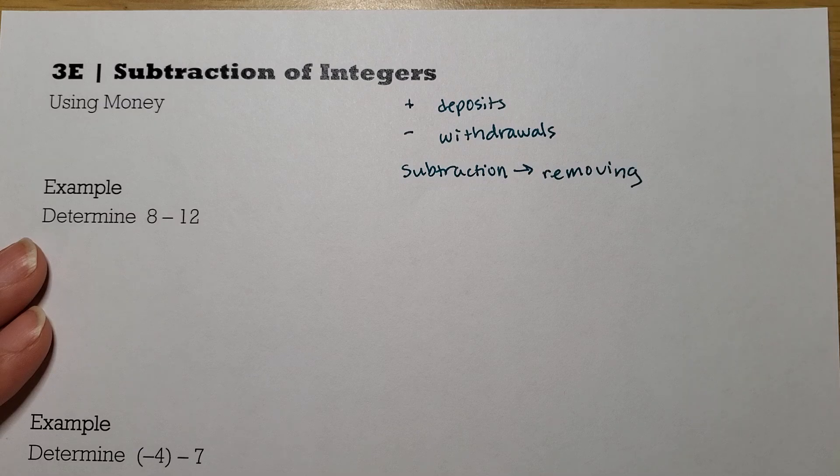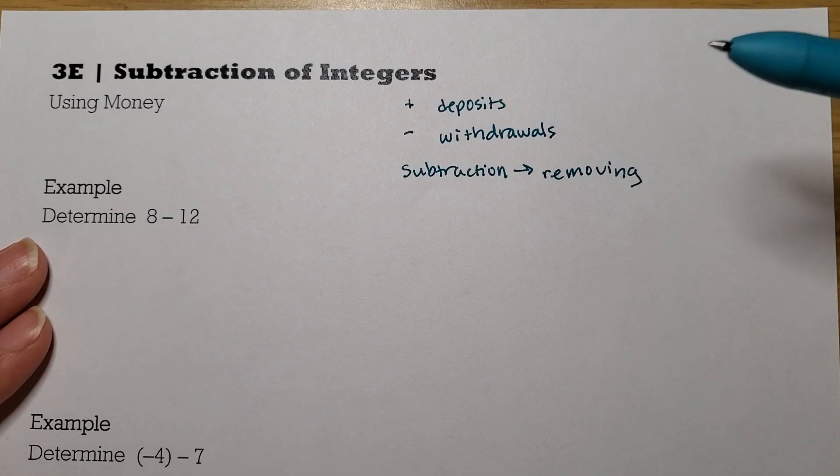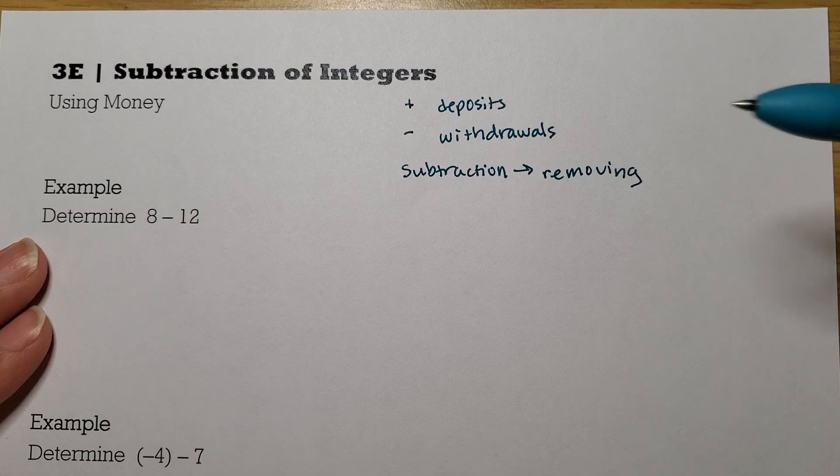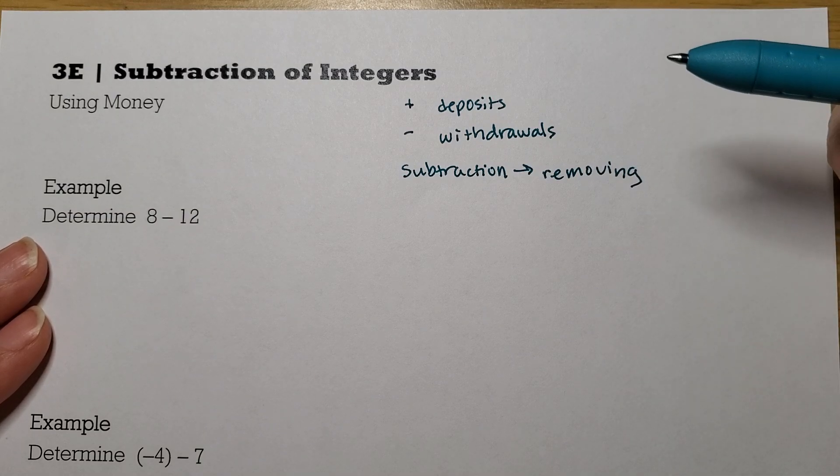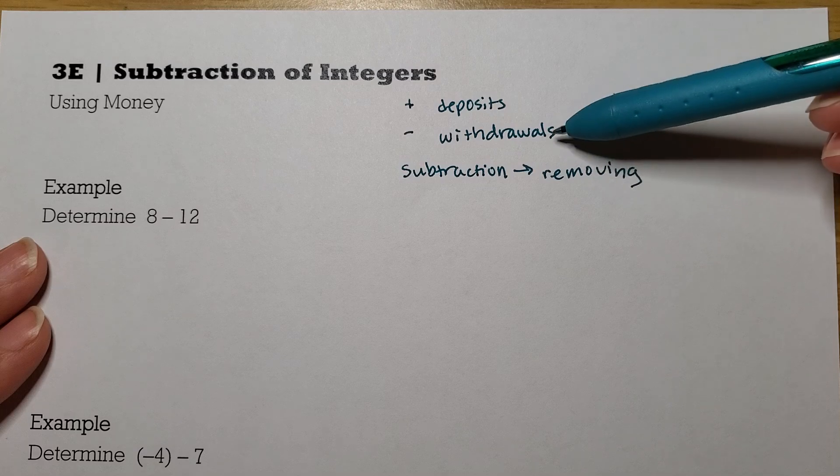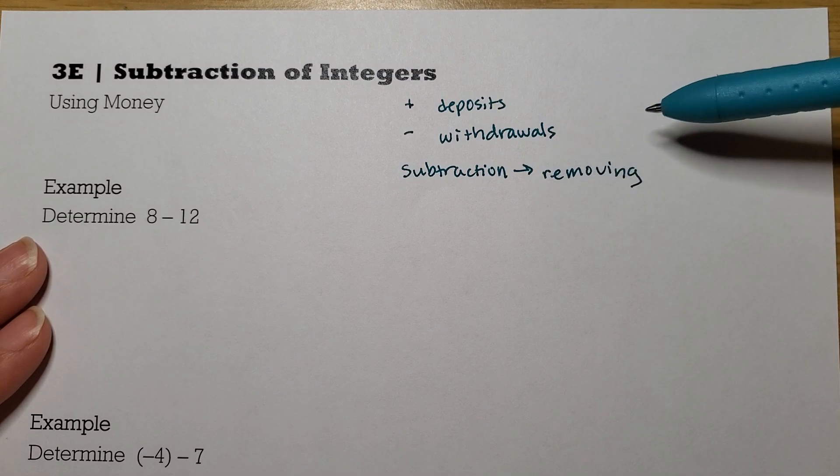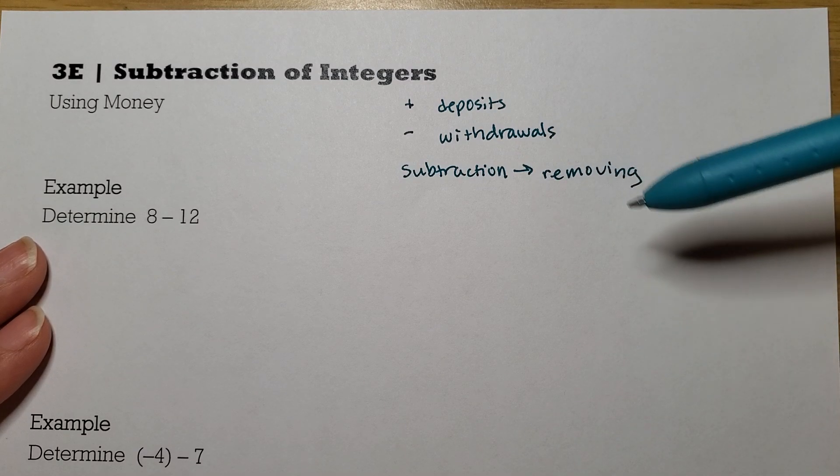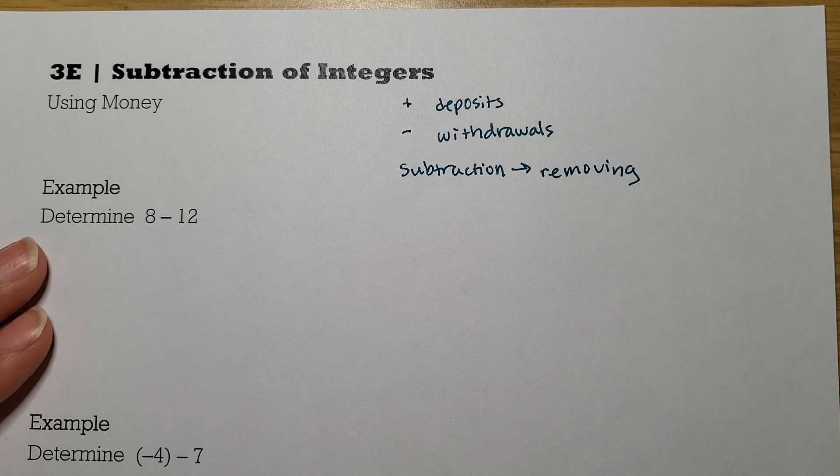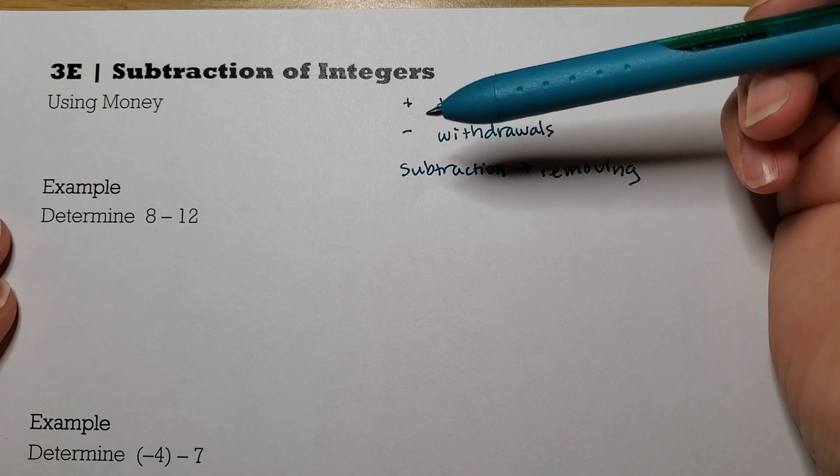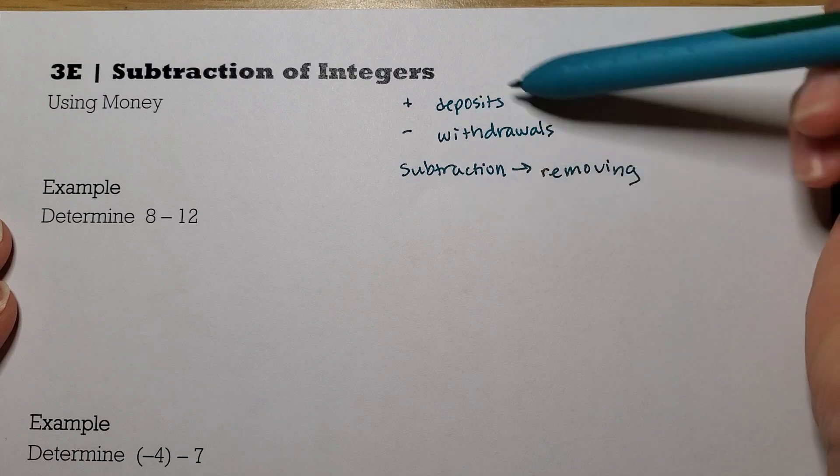So for example, if you ever have a company that charges you too much for something, and then what they do is they remove that withdrawal and credit your account, they give you money back. So if I remove a withdrawal, it's like putting money back into the account. It's like taking away a charge. So let's look at a few examples of subtraction, and we're going to think about it in these terms.